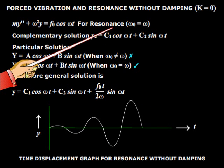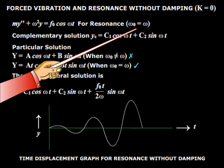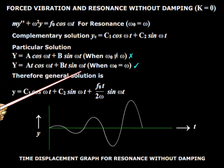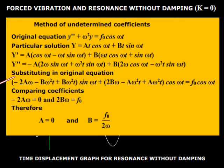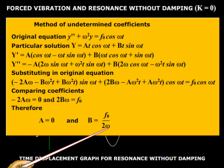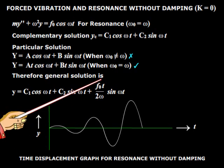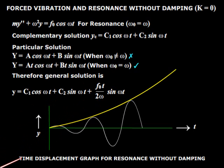In the case of resonance — that is when ω₀ is equal to ω — the particular solution cannot be the standard form, because in that case it becomes impossible to evaluate the constants. So a modified form is taken as the particular solution. Here a equals zero and b equals this expression. The general solution has an amplitude in the third term that increases infinitely with time. This is actually not possible because there is always some damping.